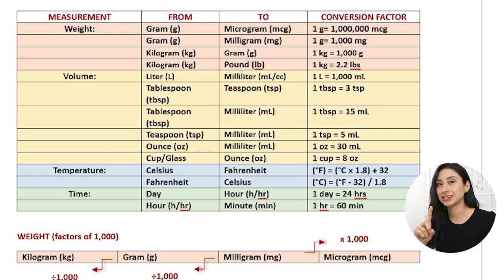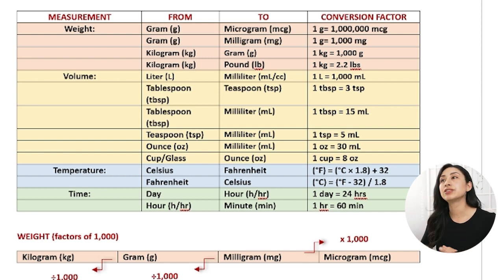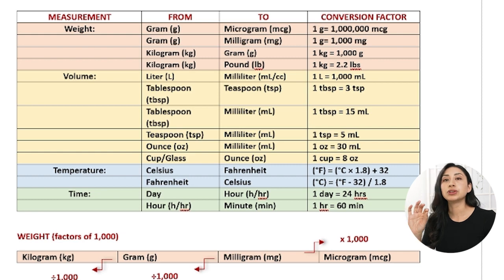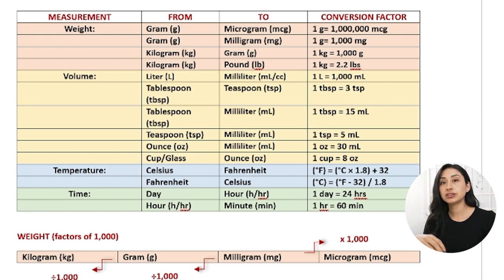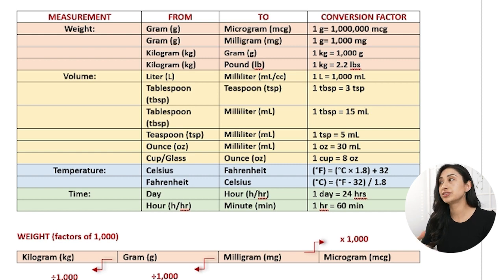The second basic concept that you really have to know is memorizing whether you are going to be converting by multiplying or you're going to be converting by dividing. You're going to have to know whether you are going to divide or multiply, and then you have to know by what. This is going to require a lot of memorization — you're going to have to take the time to memorize a lot of these concepts.